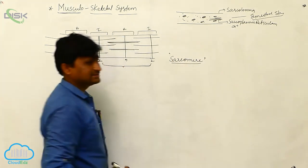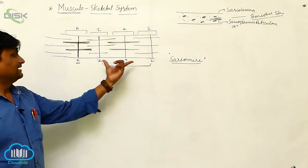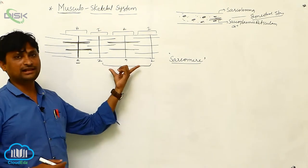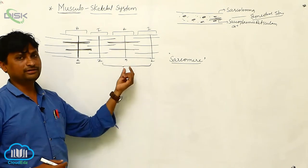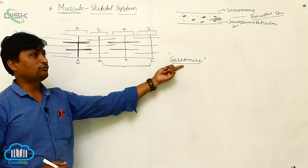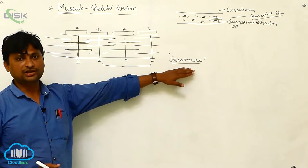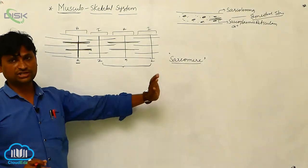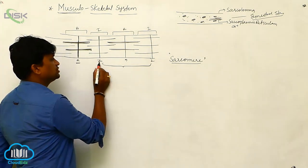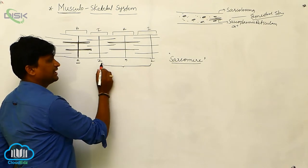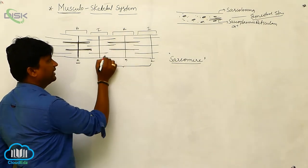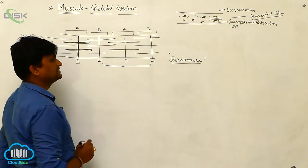The definition of sarcomere: the middle part of the muscle fiber between two successive Z lines is called the sarcomere. The sarcomere is the structural and functional unit of the muscle. Within the sarcomere we have two Z lines, an A band, and half of an I band on each side.